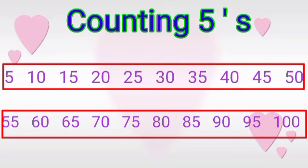First we want to write five. Then you add five. Five plus five, what will come here? Yes, ten. Five plus five, ten. From this ten, you want to add one more five. Ten plus five, what will come here? Fifteen.